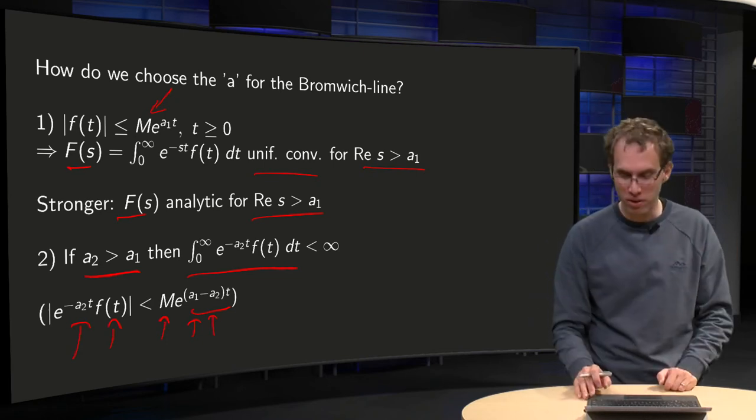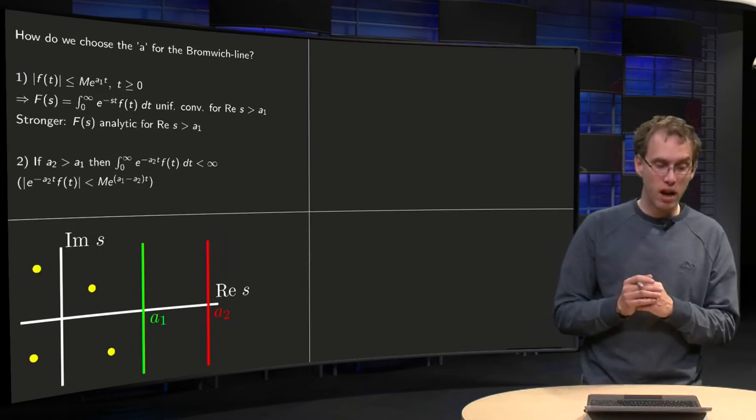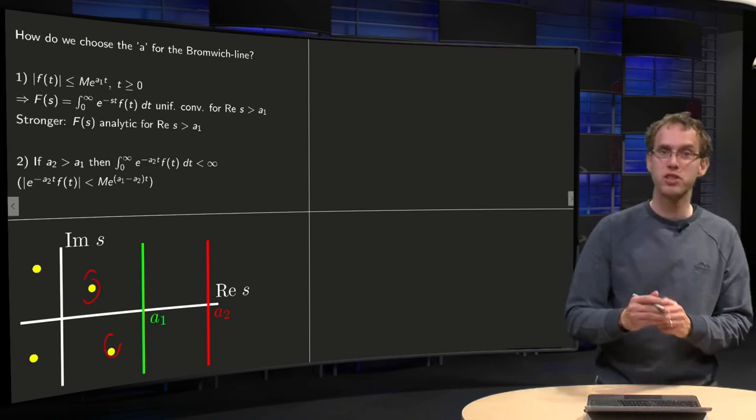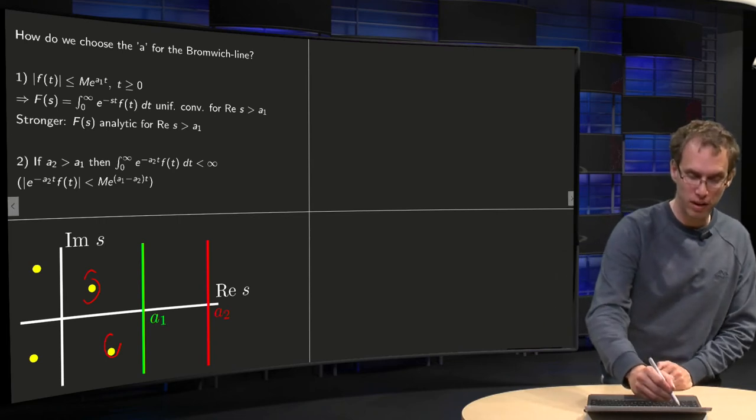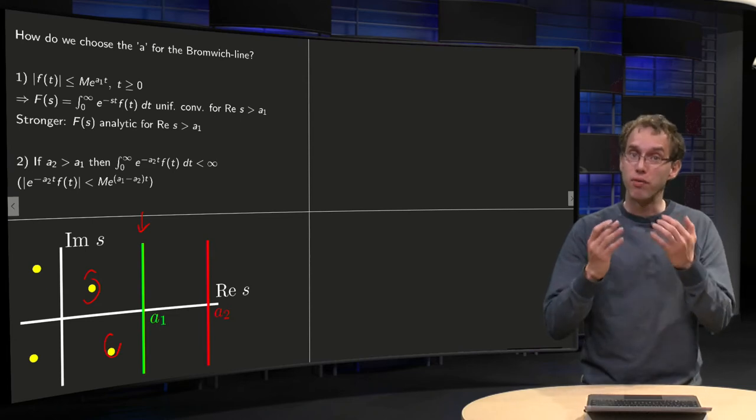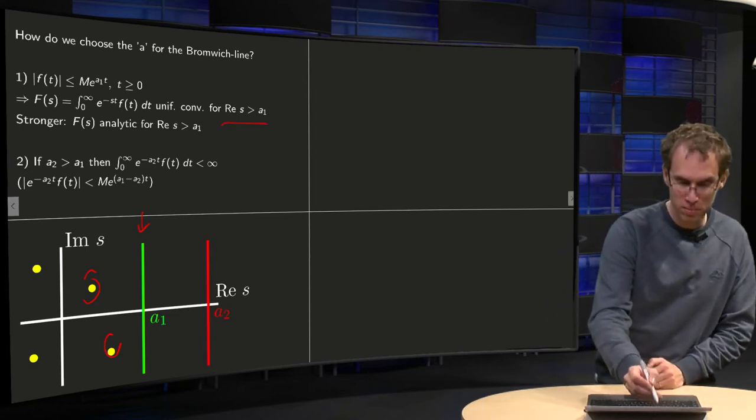But we still don't know a₁, so what can we do? Well, we know from our a₁ that if we have some singularities over here, the yellow dots, that they are all to the left of the line where the real part of s equals a₁, because our function is analytic to the right of that line.